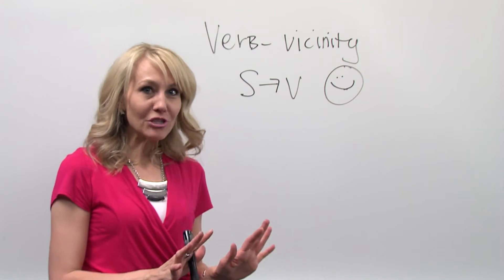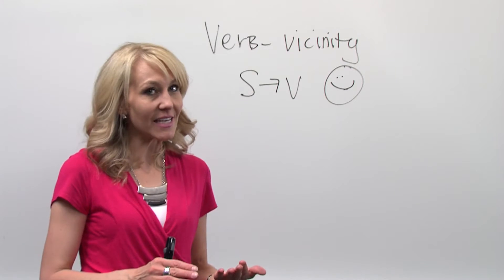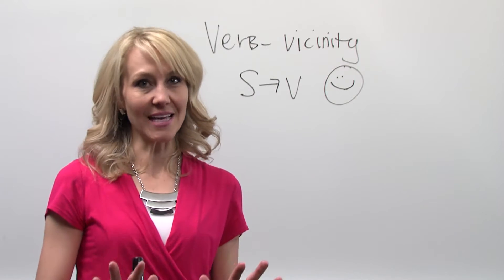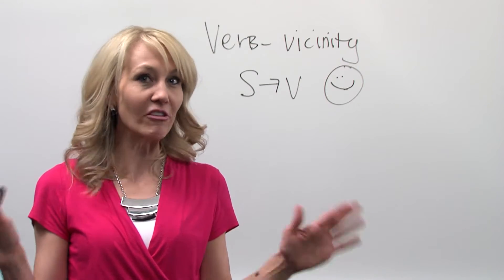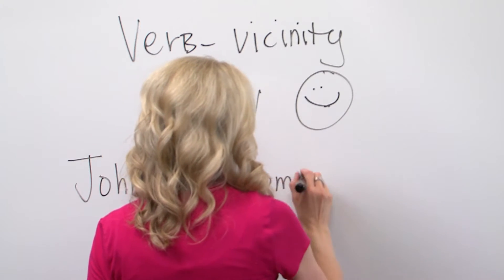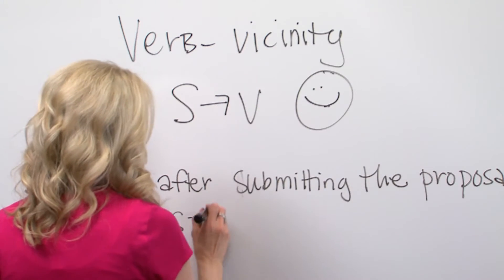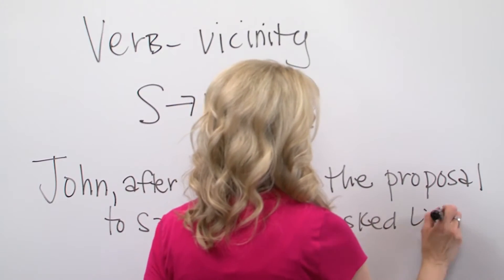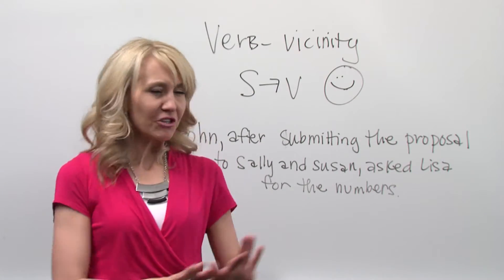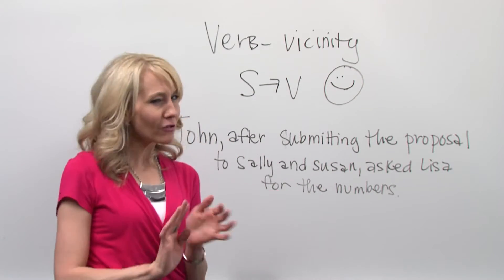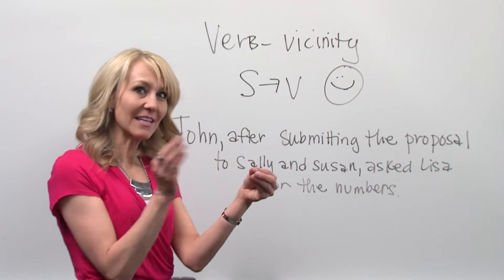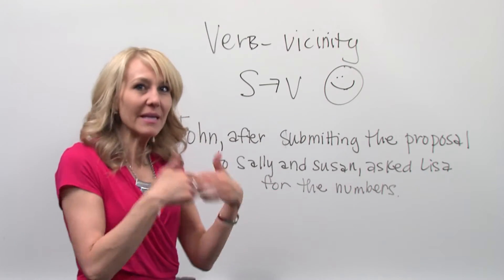The real reason that subjects and verbs need to be close together is because you more clearly state who's doing what. Now, this is a guideline — this sentence isn't breaking any grammatical rules — but the guideline is that subjects and verbs should stay close together so that they're happy and strong.